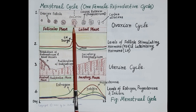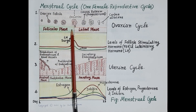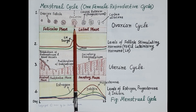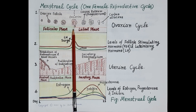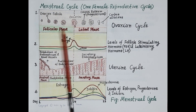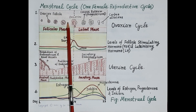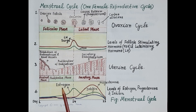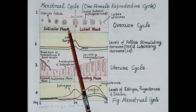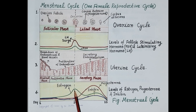The dominant follicle develops during the first half of the ovarian cycle, that is day one to day 14, and this period is called the follicular phase. Very importantly, the ovarian follicle develops in the presence of follicle stimulating hormone, and a developing follicle releases estrogen, so the levels of estrogen rise during the follicular phase.